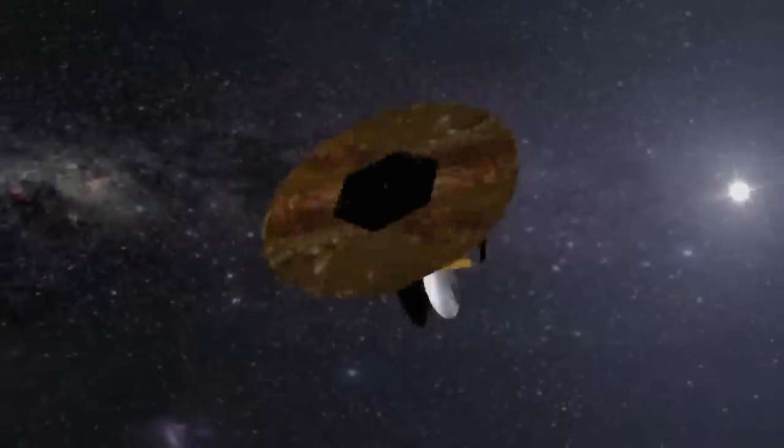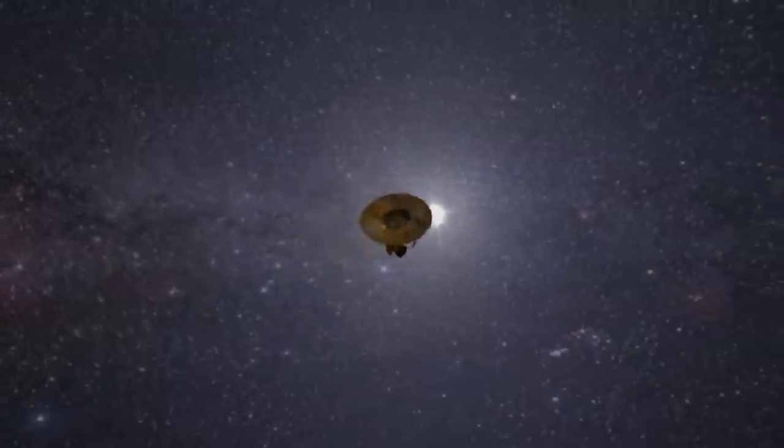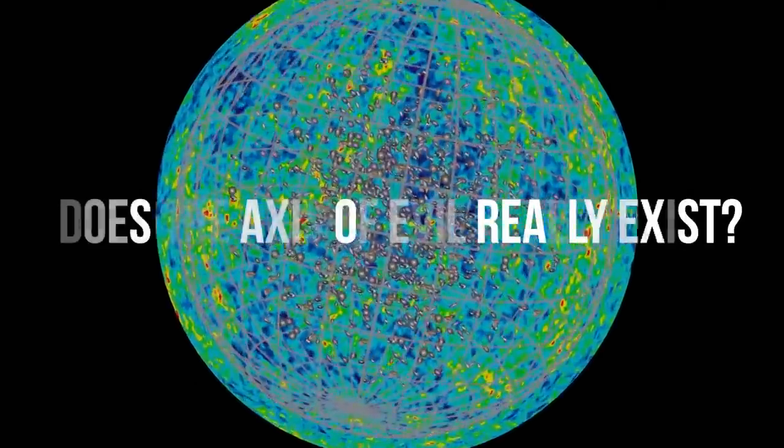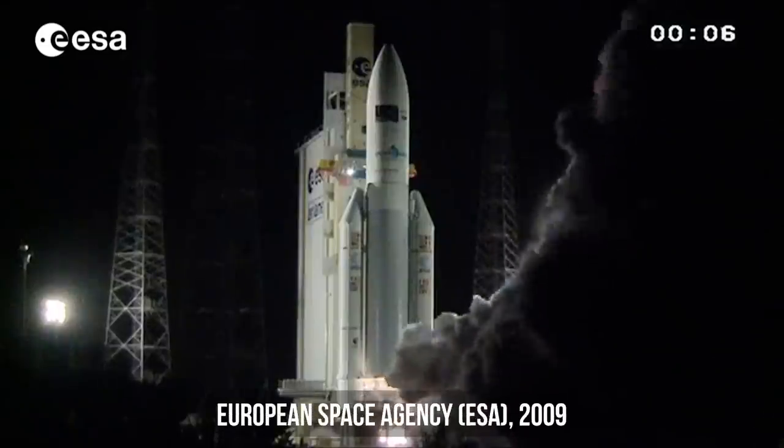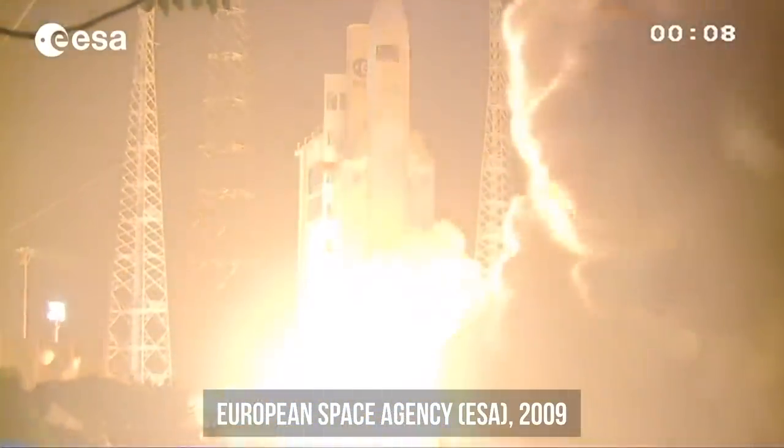But the WMAP probe didn't answer all the scientists' questions. Moreover, some still considered the axis of evil a mere mistake. So, they needed another mission that would finally dot the I's and cross the T's.